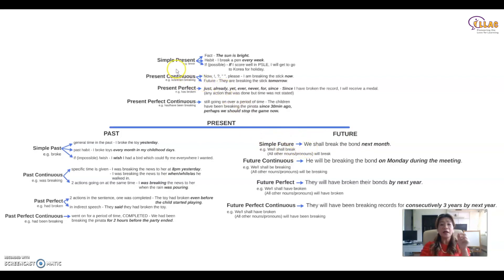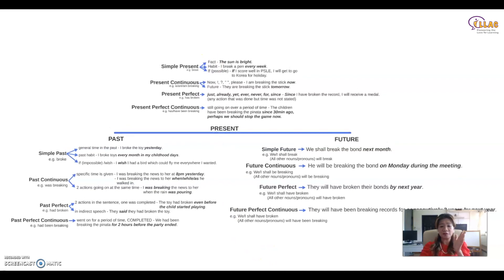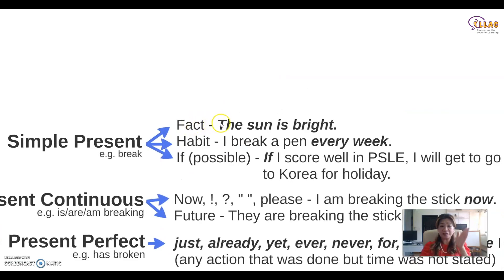So simple present — when do you use it? Tenses are all about timing. For simple present, everything must be happening at the present moment. It can be a fact: 'The sun is bright' — you cannot say 'the sun was bright.' It should also be a habit, something you do consistently — every week, every Monday, every year: 'I break a pen.' You cannot say 'I broke a pen every week.' So every time there is a time reference saying it is happening now at the present, you use simple present tense. Another use is the if clause possible.